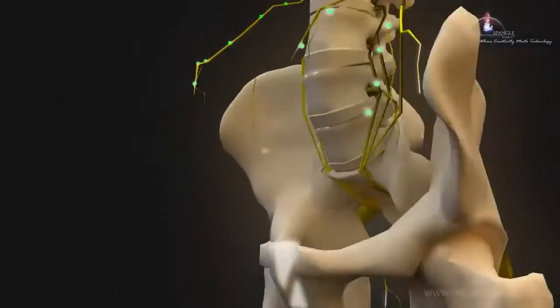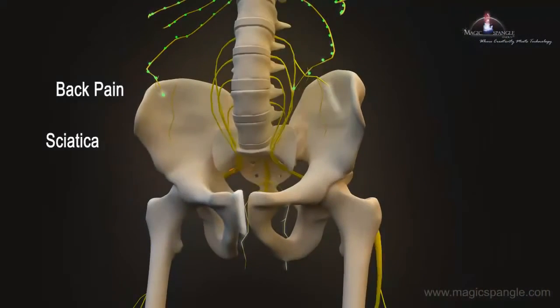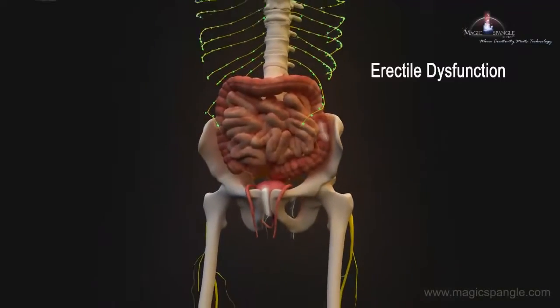So when a subluxation occurs in your lower back, it can cause back pain, sciatica, bladder weakness, irritable bowel syndrome, and erectile dysfunction.